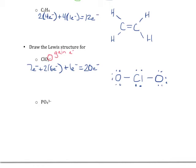Now let's check if anyone's octet is filled. The oxygen on the right has six non-bonding electrons plus two from the bond — it feels like it has eight, so it's happy. Chlorine has four non-bonding electrons and feels four bonding electrons, so chlorine also feels like it has eight. The oxygen on the left is identical to the right, also feeling eight electrons. This is a good Lewis structure — everyone's octet is filled. The last thing I need to do is put it in brackets with that negative charge on the outside to explain why there's an extra electron.